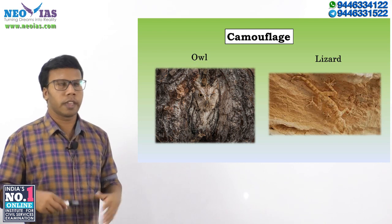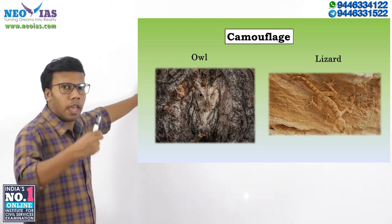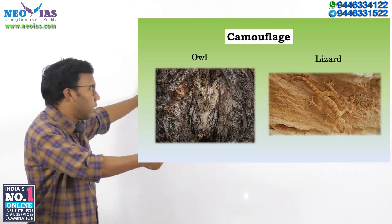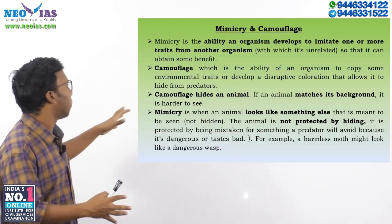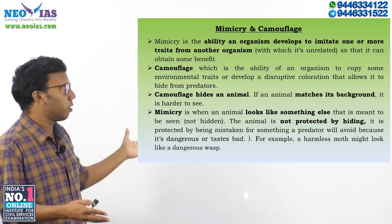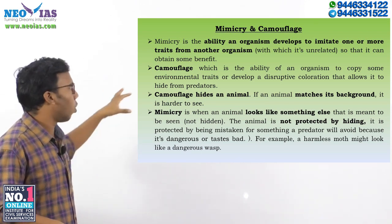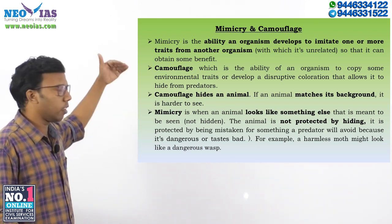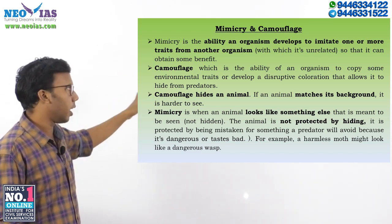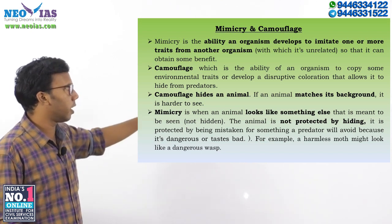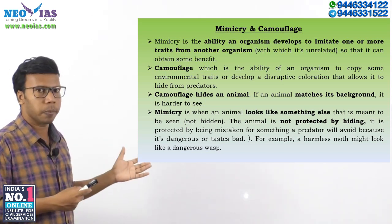Camouflage is an animal trying to blend in with its surroundings by having the same color as the background. Mimicry is when an animal looks like something else that is meant to be seen — the animal is not protected by hiding. In camouflage the animal is protected by hiding, but in mimicry it is protected by being mistaken for something a predator will avoid because it is dangerous or tastes bad.